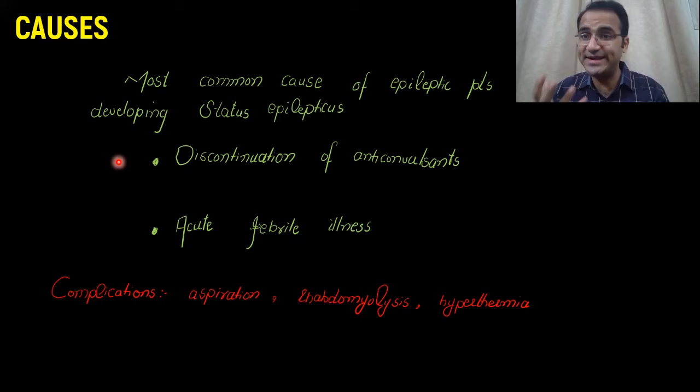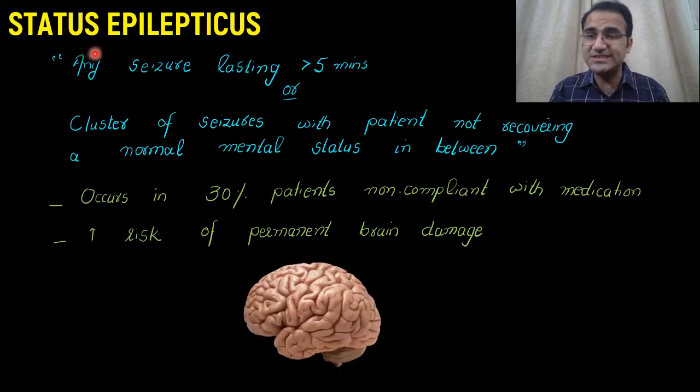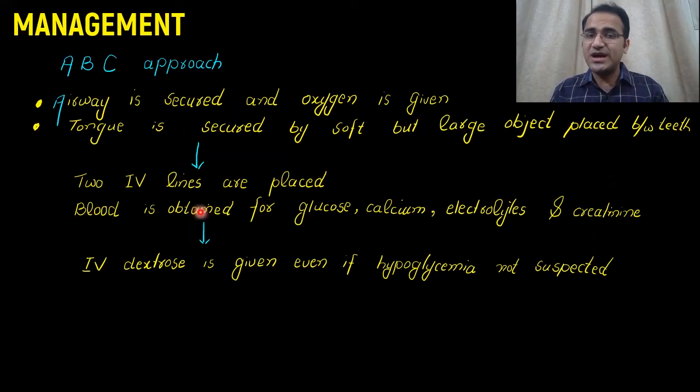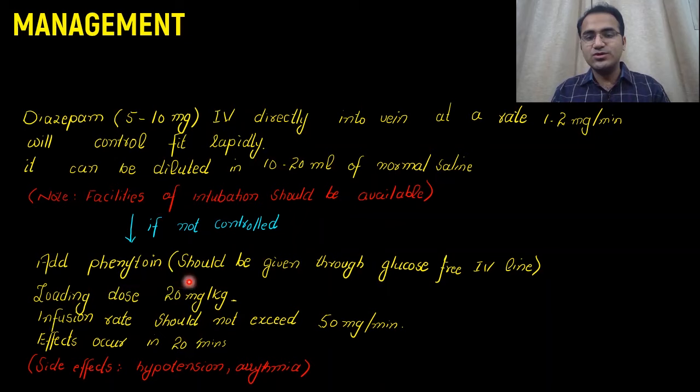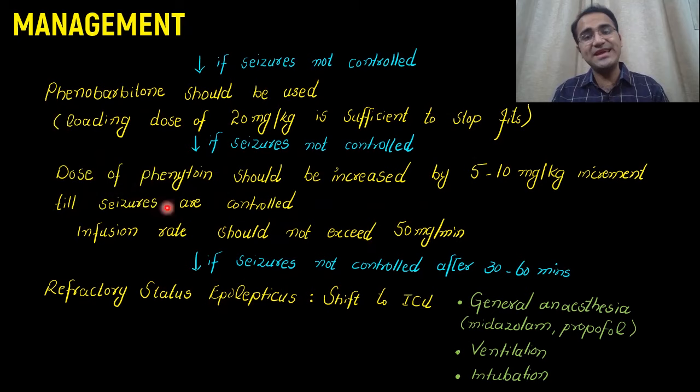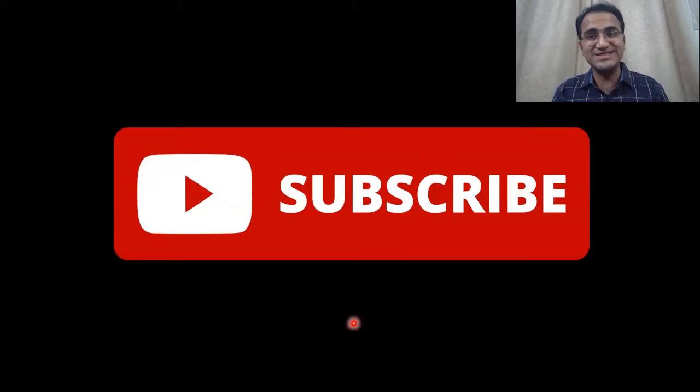In summary, we talked about status epilepticus as any seizure lasting greater than 5 minutes. The approach involves ABC, IV lines, IV dextrose, diazepam, phenytoin given in a glucose-free IV line, phenobarbitone, then incrementing phenytoin. Refractory status epilepticus requires general anesthesia in the ICU. If you liked this video, please click subscribe and check out the other video on epilepsy — the link is in the description below. Thank you.